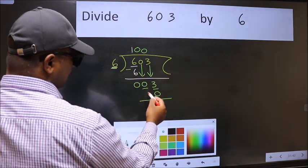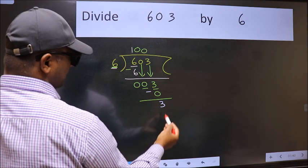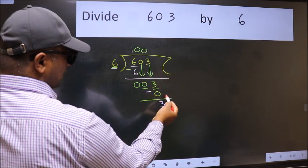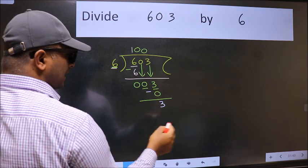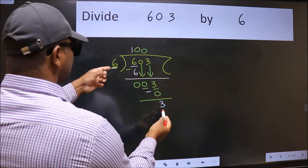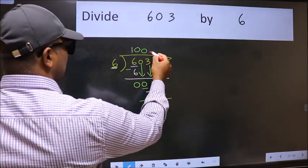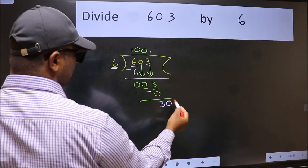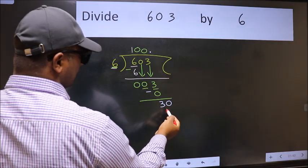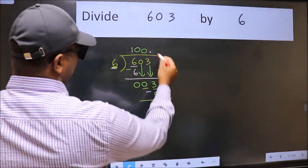Now we subtract, we get 3. Over here we did not bring any number down, and 3 is smaller than 6. So now we can put dot and take zero. So 30, when do we get 30 in the 6 table? 6 fives is 30.